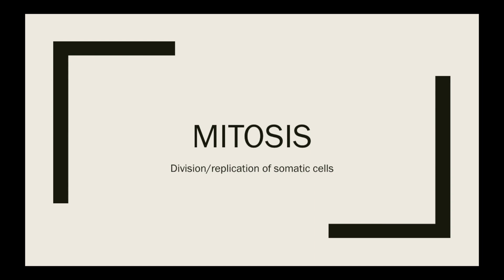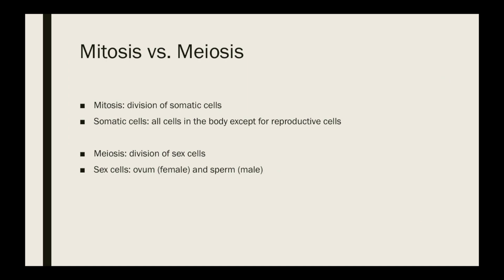Let's talk about mitosis, the division and replication of somatic cells. When we're talking about mitosis, we also have to remember the difference between mitosis and meiosis. Mitosis is the division of somatic cells, and somatic cells are all cells in the body except for reproductive cells, or sex cells, as we often call them.